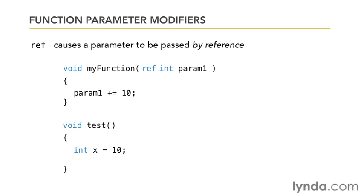Now here I have my test function and I've got my integer variable named x. When I call the function, I also have to put the ref keyword in front of the parameter that I'm passing to the function. When I do this, param1 is now a reference to the x variable and not a copy of its existing value.